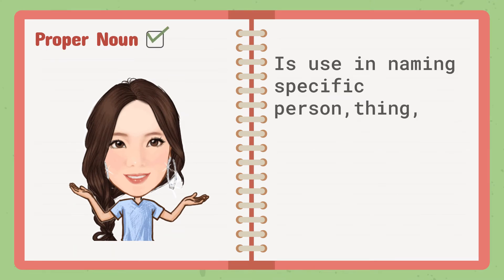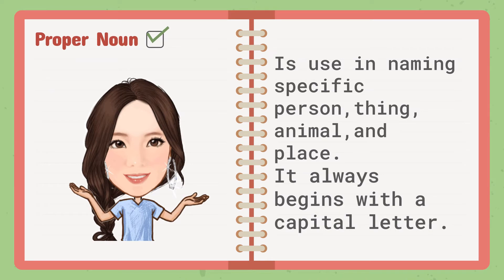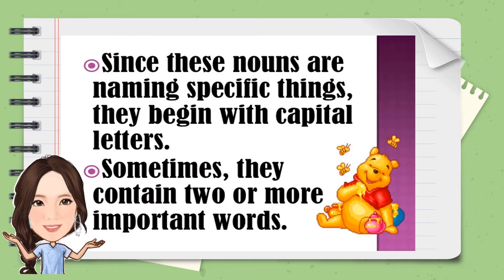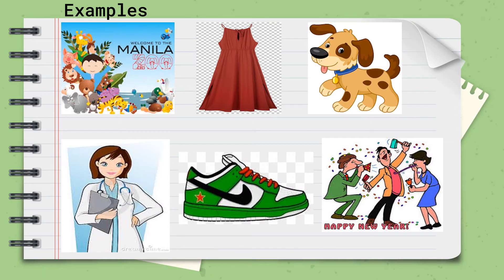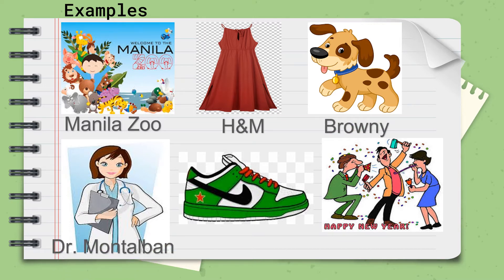Proper noun is used in naming a specific person, thing, animal, and place. It always begins with a capital letter. Since these nouns are naming specific things, they begin with capital letters. Sometimes they contain two or more important words. Here are examples of proper nouns: Manila Zoo, H&M, Brownie, Dr. Mantelbon, Nike, New Year.